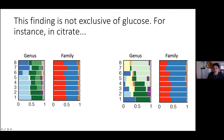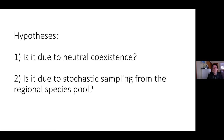Here you can see the genus-level populations at equilibrium for eight replicates: various alternative compositions, yet in all cases the family-level composition is very similar. We have seen this not only for glucose but for other nutrients as well. Now I'm going to evaluate two different hypotheses for why we see so much variation at the species level despite convergence at family and functional levels.